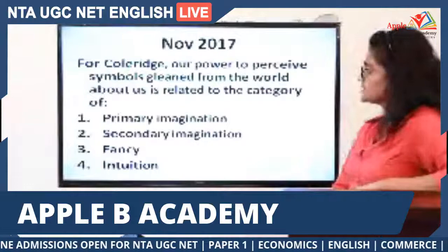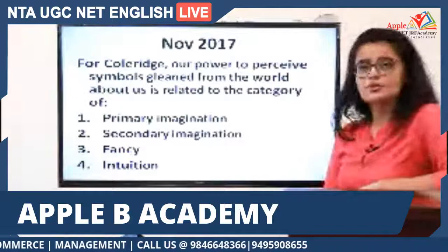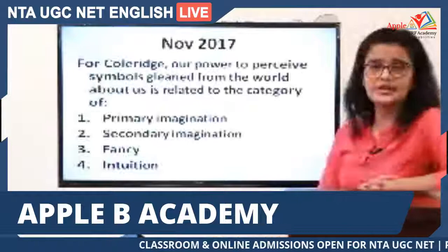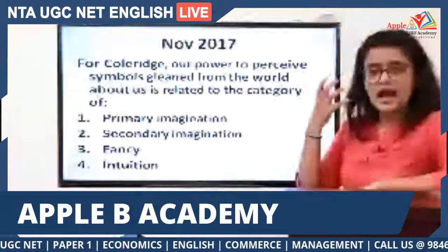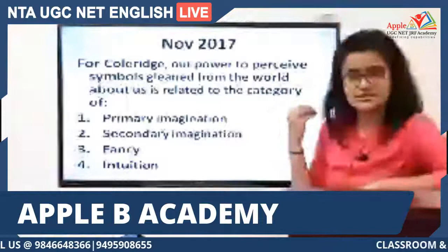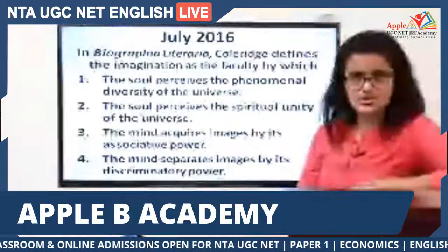From the November 2017 exam: 'For Coleridge, our power to perceive symbols gleaned from the world about us is related to' — the answer is primary imagination, because this is something every human mind naturally possesses. From the July 2016 exam: 'In Biographia Literaria, Coleridge defines imagination as the faculty by which' — the answer is option two: the soul perceives the spiritual unity of the universe.